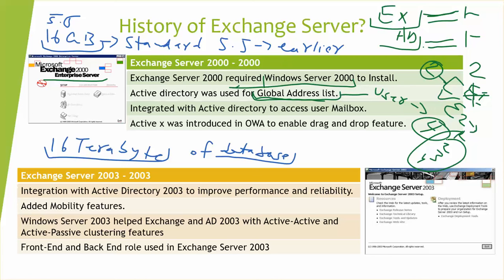Clustering in Exchange 2000 increased the limit from two to four servers. Another improvement was the introduction of ActiveX. With this version in Outlook Web Access, you were able to use drag-and-drop — for example, dragging an email from your inbox to another folder. Exchange 2000 enabled ActiveX, which gave the capability of moving things around in Outlook Web Access.